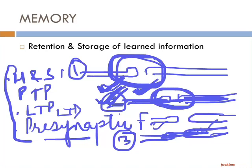Memory traces may stay for a longer or shorter duration — sometimes fading away after a few hours, days, or weeks; other times staying throughout life. Depending on the duration for which the memory traces stay, memory is divided into short-term memory, intermediate memory, or long-term memory.